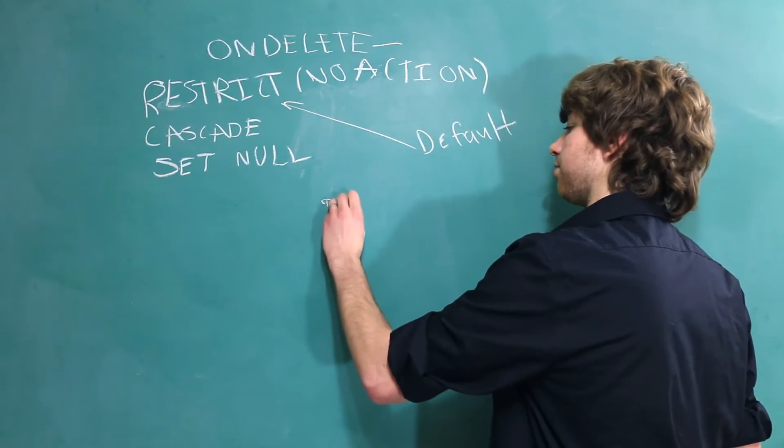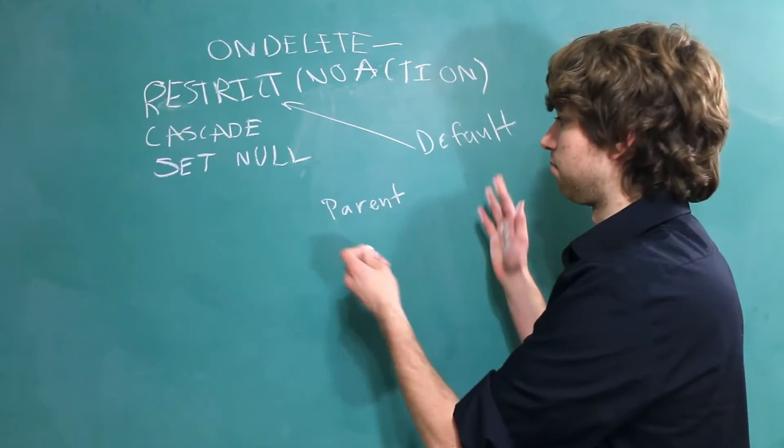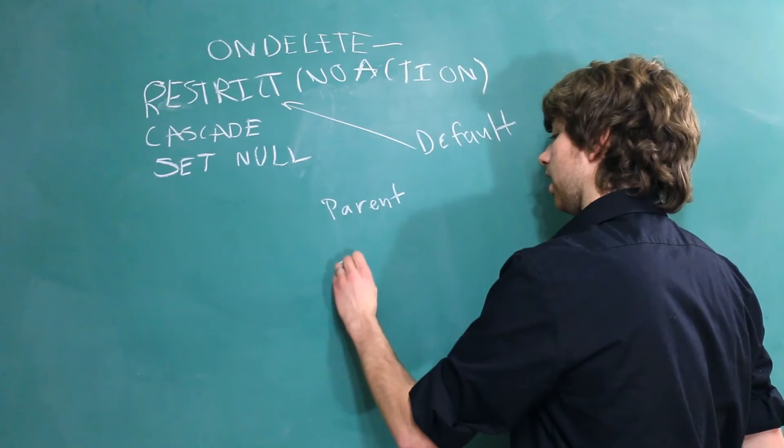Overall, these are pretty easy to understand. It's more important that you just know that they're there in case you need to use them. So, the parent and then the child.